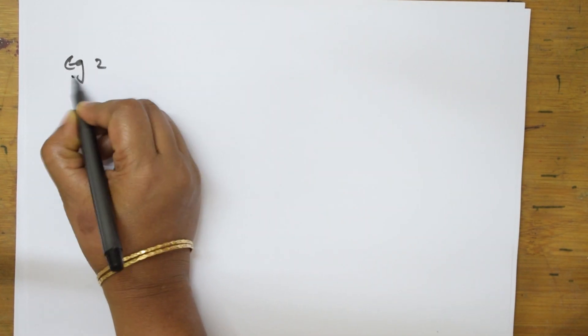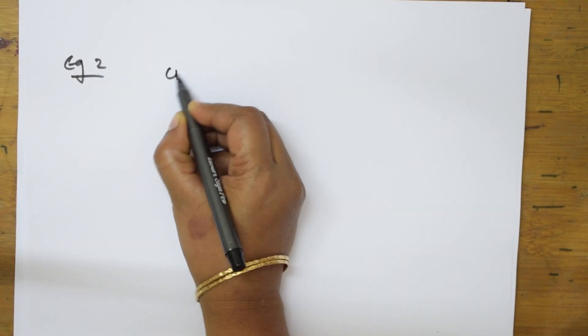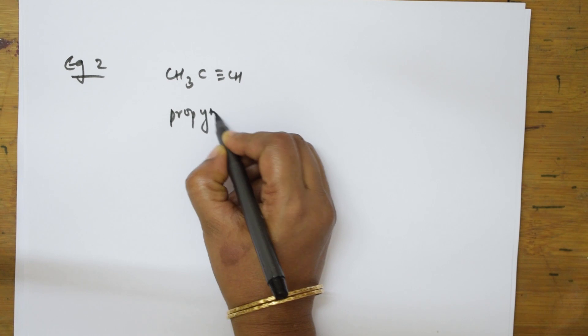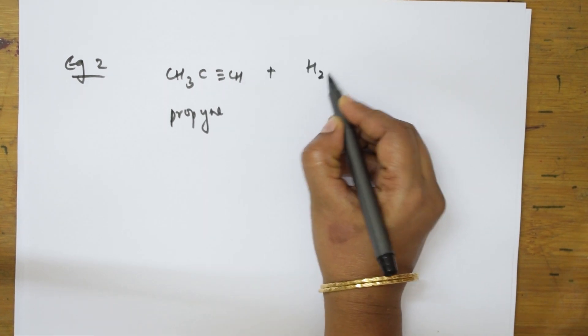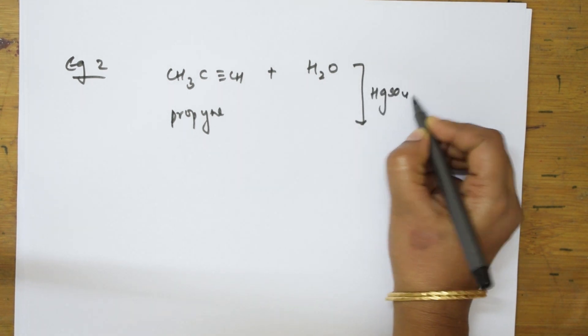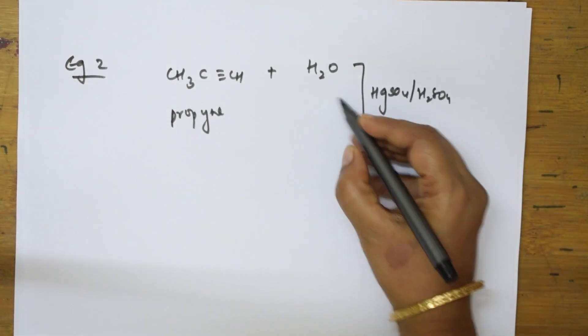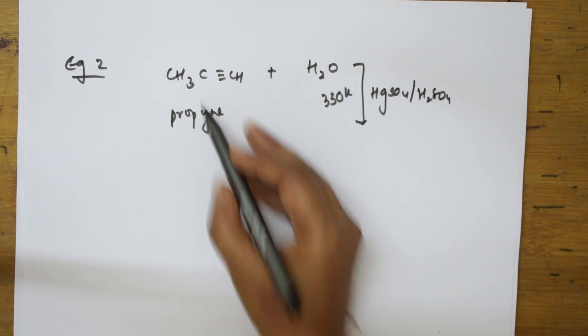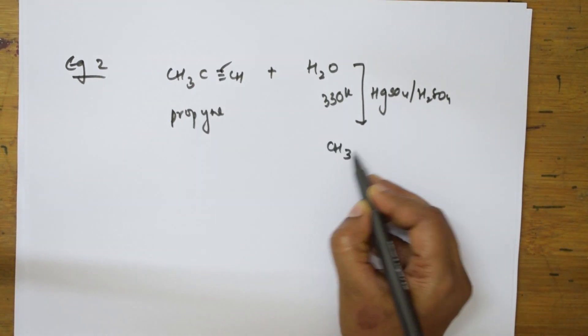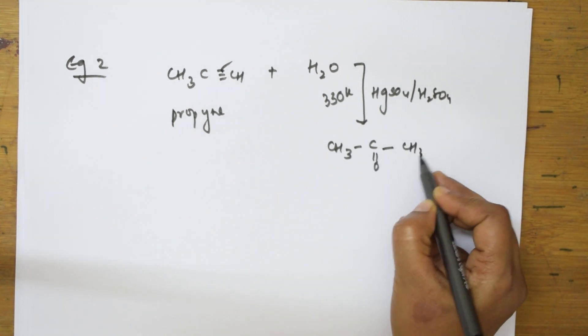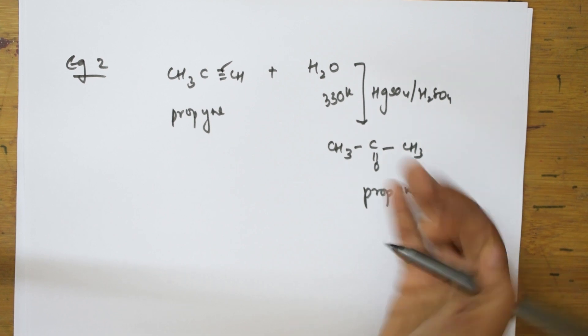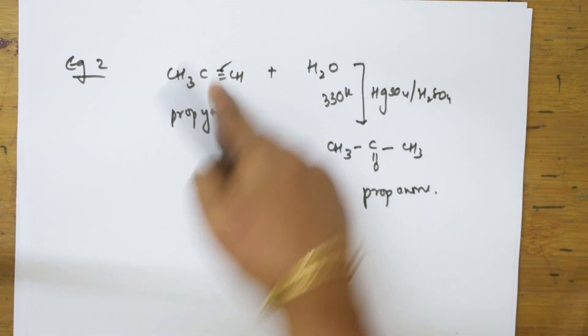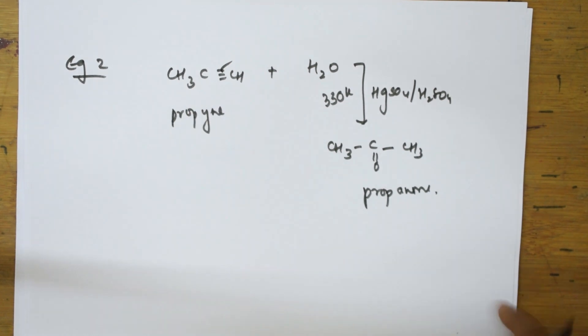Let us see one more example — hydration of a non-terminal alkyne. In example 2, I am taking propyne. We do the hydration reaction: add water in the presence of mercuric sulphate or sulphuric acid at 330 Kelvin. The bond breaks, hydrogen adds to one carbon, and oxygen adds to the other. The product obtained in this case is propanone.